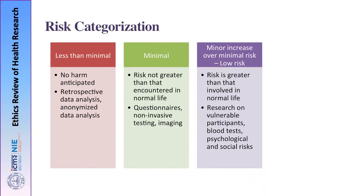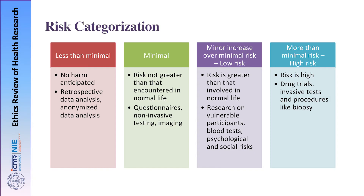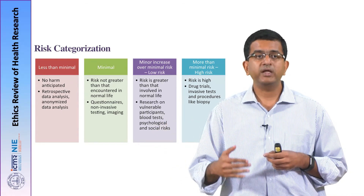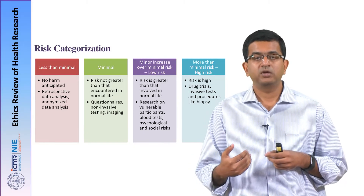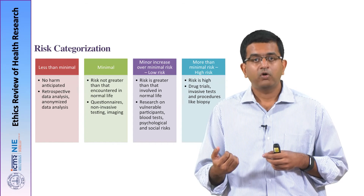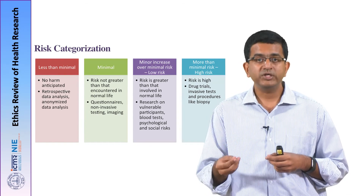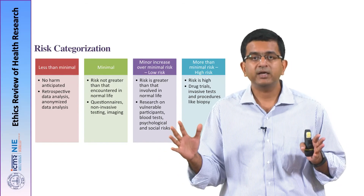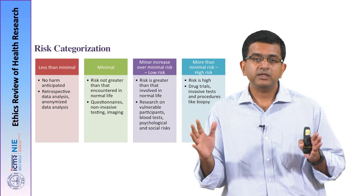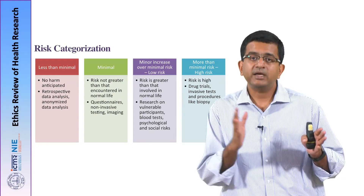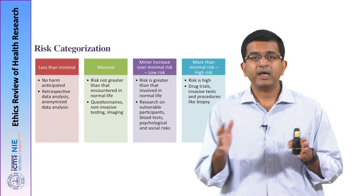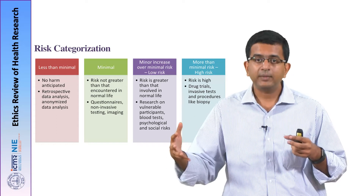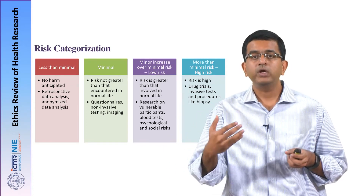The final category is high-risk research — substantially greater risk than minimal risk. These are high-risk research projects, for example drug trials involving intake of a medicinal substance where there could be inherent adverse events, or invasive procedures like biopsy. All these are categorized as high-risk or more than minimal risk studies. The ethics committee has to look at the research proposal and categorize it into these broad risk categories, bearing in mind that there may be overlaps between categories.